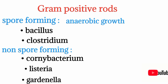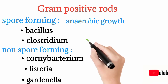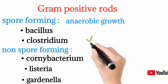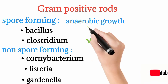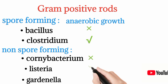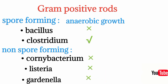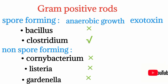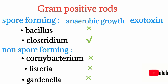The second property is anaerobic growth — the ability to grow without oxygen. Only Clostridium species can grow without oxygen. Bacillus, Corynebacterium, Listeria, and all other gram positive rods show aerobic growth only.